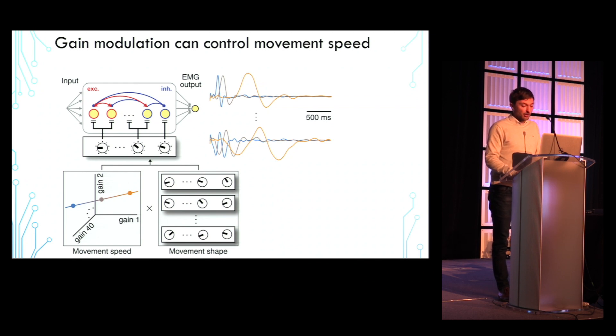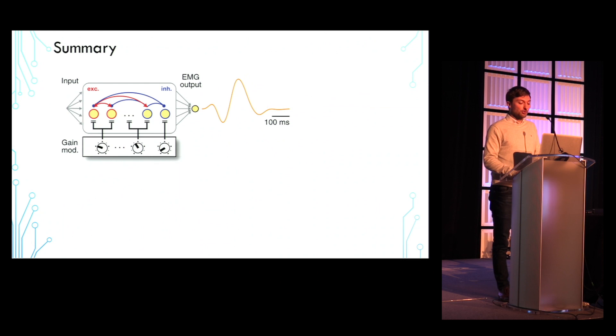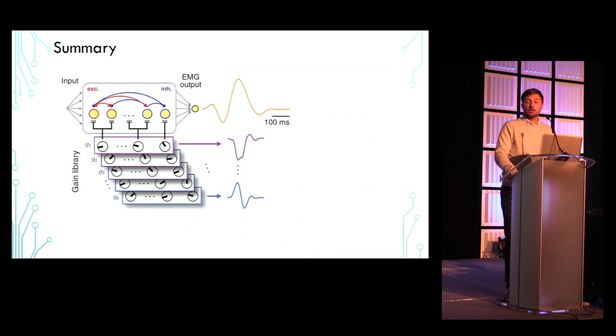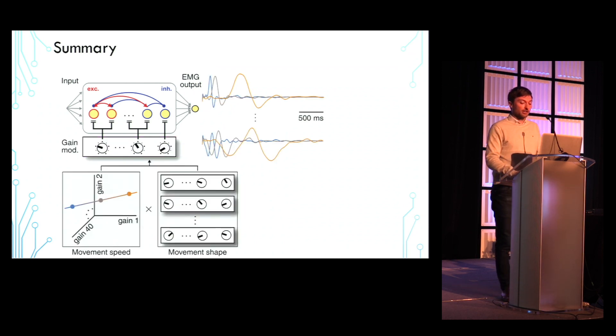In summary, our findings build on the established effects of neuromodulation by showing that a recurrent network's computations can be controlled without changing its connectivity by modulating only neuronal responsiveness. We showed that a relatively small number of modulatory units provide sufficient control of network activity, that previously learned gain patterns can be combined predictably to generate new movements, and that it is possible to independently change movement speed while preserving movement shape.